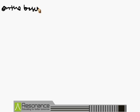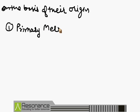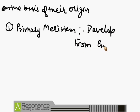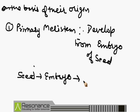Now we discuss the types of meristem on the basis of their origin. The first one is the primary meristem, which is developed from the embryo of the seed. Every seed has a small structure called the embryo in its structure. This embryo is responsible for the development of new plants. Such type of meristem is known as the primary meristem.